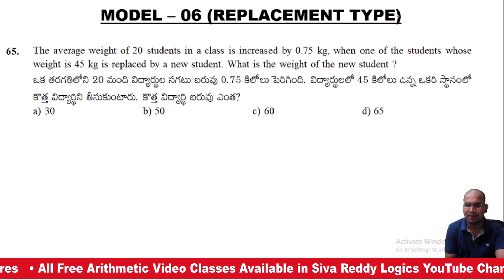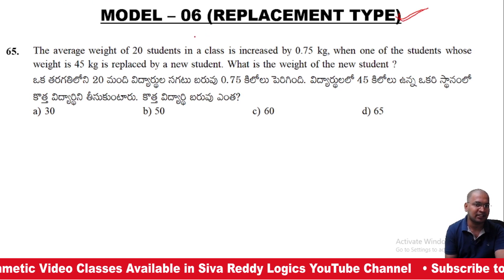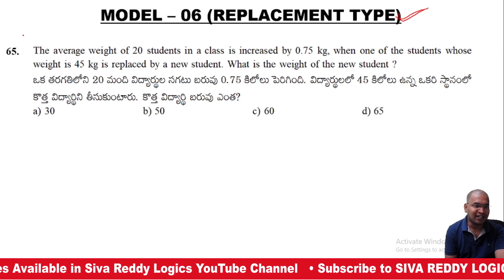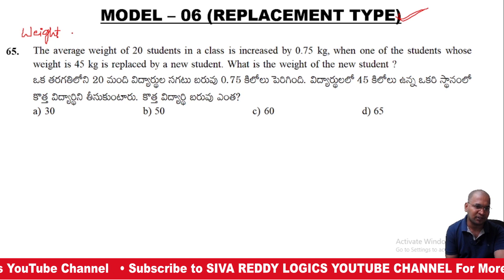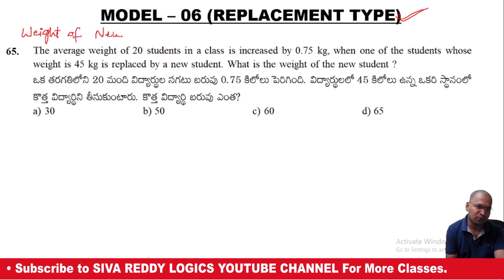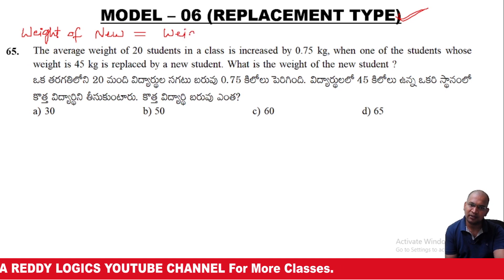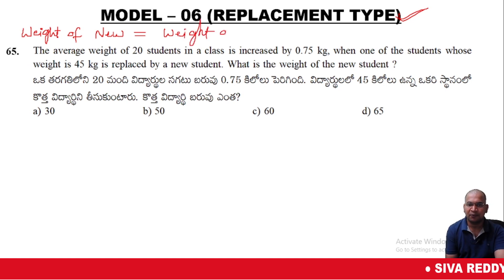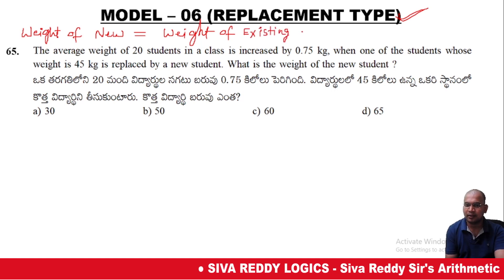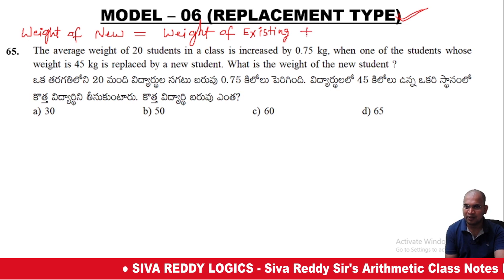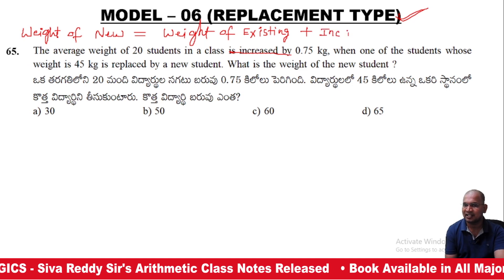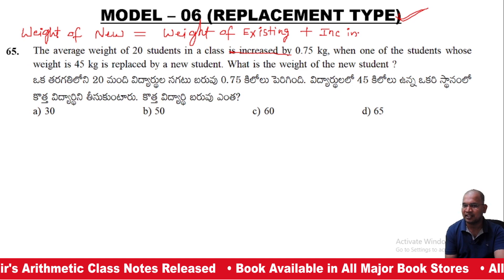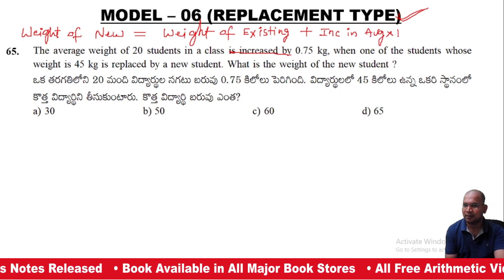The weight of the new student is equal to the weight of the old student, plus or minus the change in average into the number of students. If the average increases, it is plus; if it decreases, it is minus.